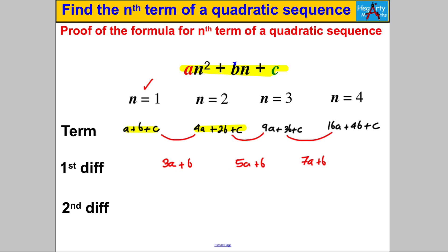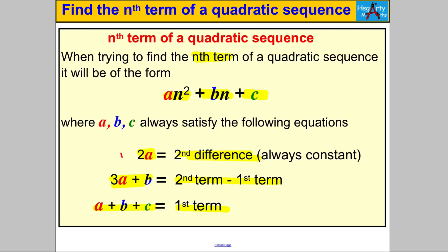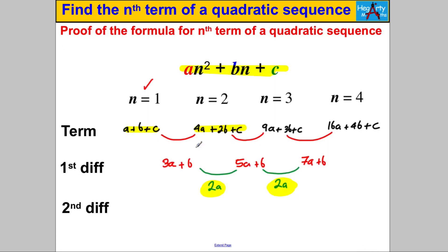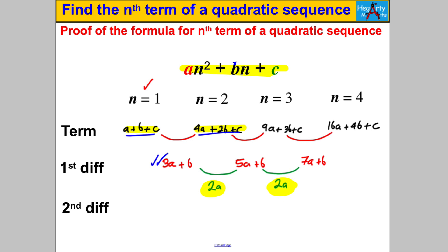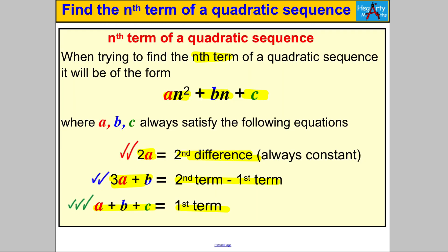Now for the second difference: (5a + b) − (3a + b) = 2a. And (7a + b) − (5a + b) = 2a. The magic has happened — 2a is always equal to the second difference. I also told you that the second term subtract the first term is 3a + b — and indeed that is what we wrote. And the first term is always a + b + c — and indeed that is what we wrote. So that is now a proven fact and we're allowed to use it.